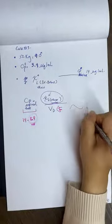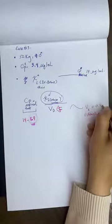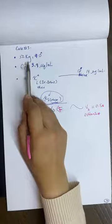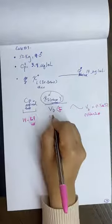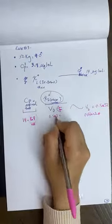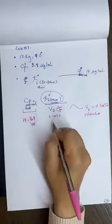I want the 14 desired concentration, but I already have a baseline. VD estimate equals 0.5 multiplied by 52, which equals 26 liters.